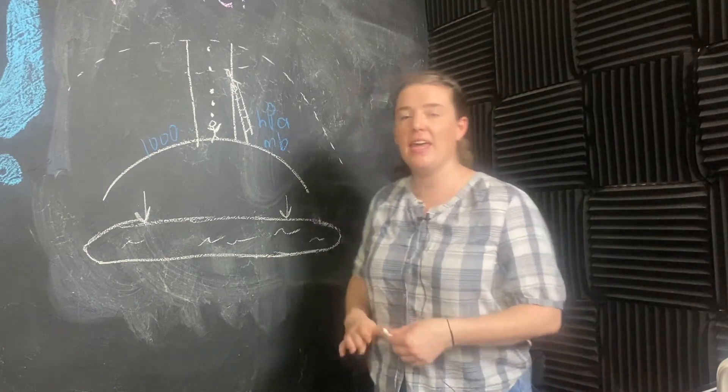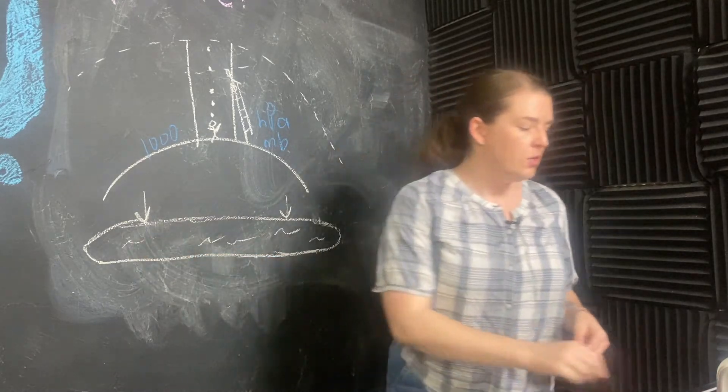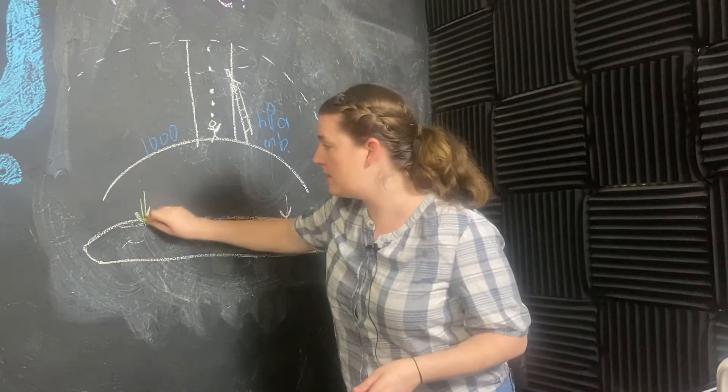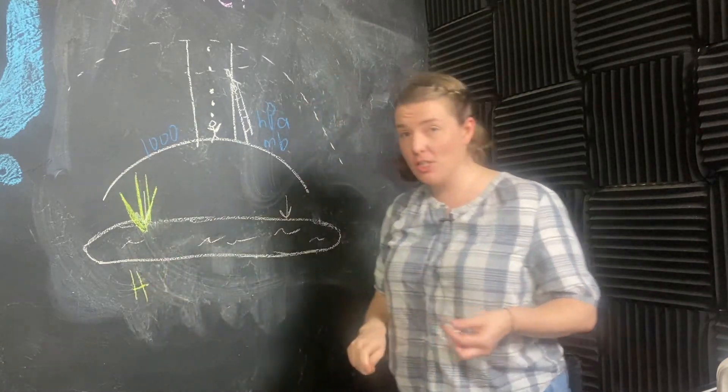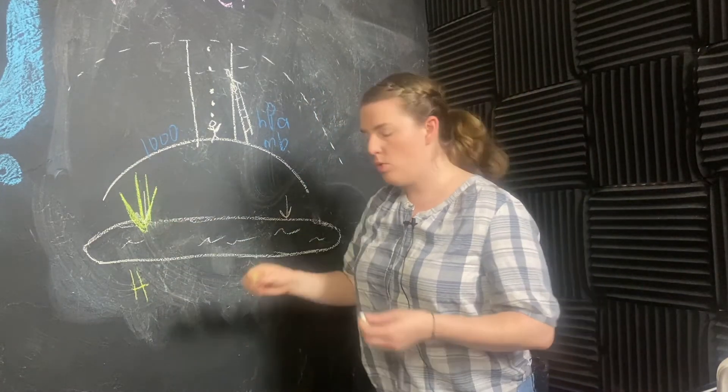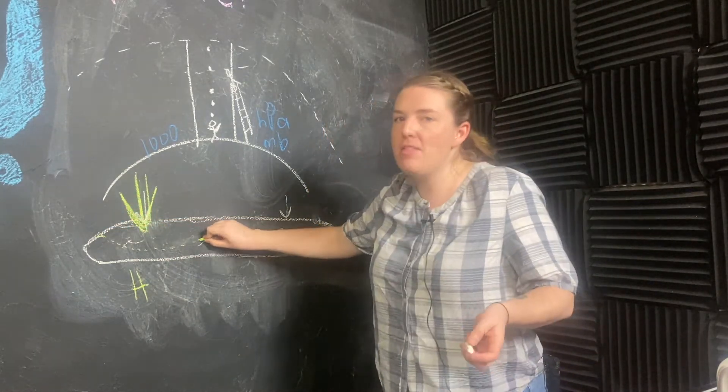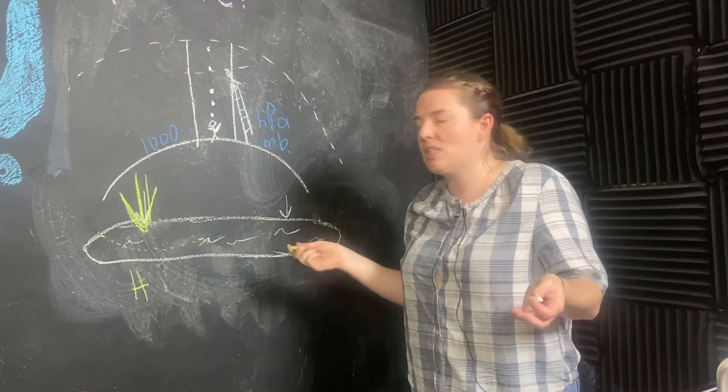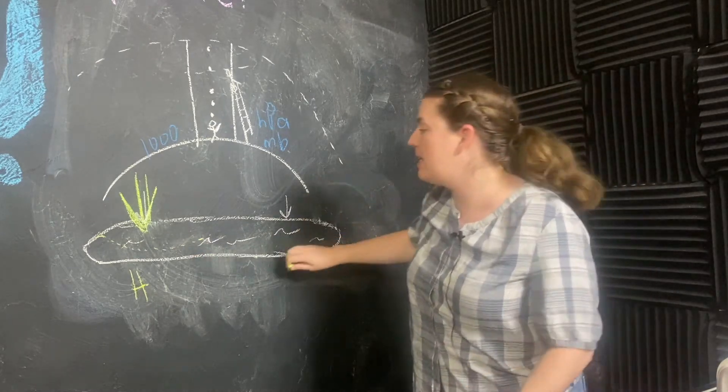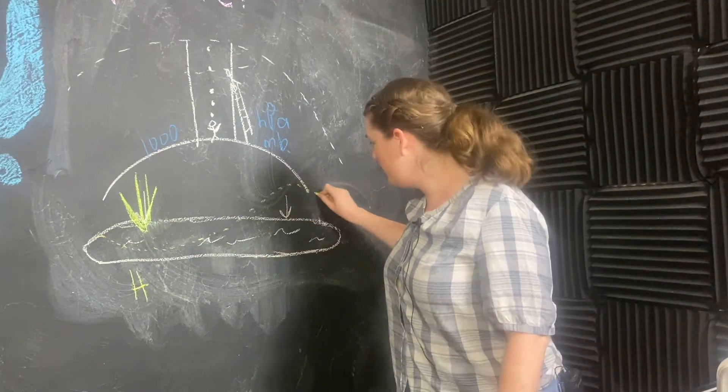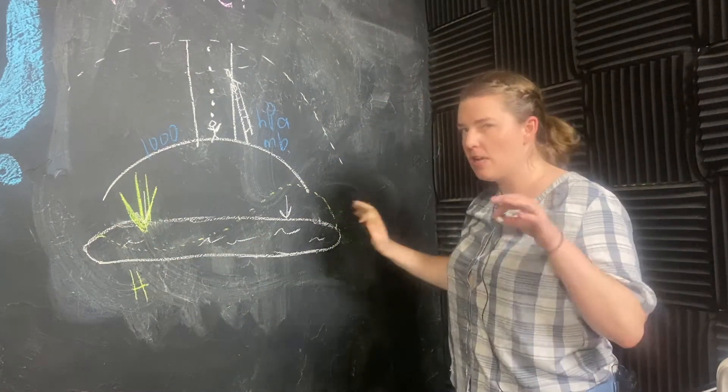But what would happen if I came in and I pressed down really hard on this side? So we're going to make this a region of high surface pressure. So you could imagine that this surface would sort of dip down, but then the rest of it has to go somewhere. The water that was there has to go somewhere. We would expect it to pop up over here.